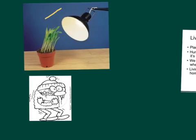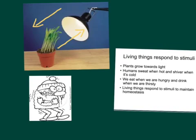In this top picture, we have a plant and light is shining this way — that's the stimulus — and in the response the plant grows tilted over that way. In this picture, this man is obviously cold; the stimulus is a drop in temperature, and his response is to shiver to warm up. So all living things respond to stimuli — for example, plants growing towards light, humans sweating, eating when we're hungry, drinking when we're thirsty.